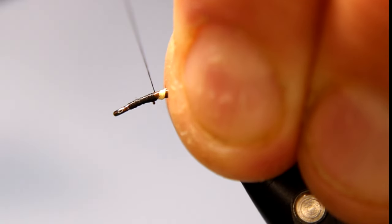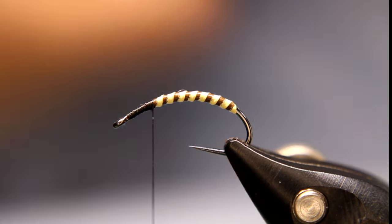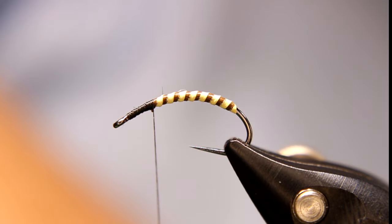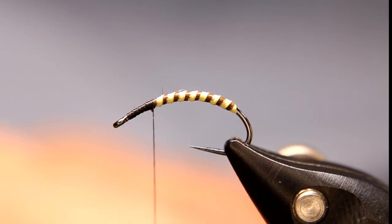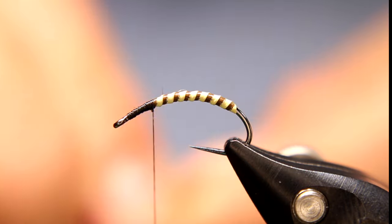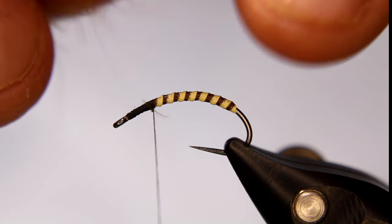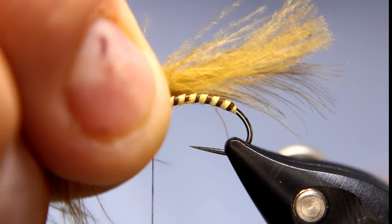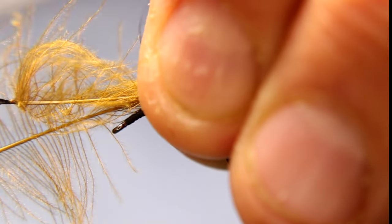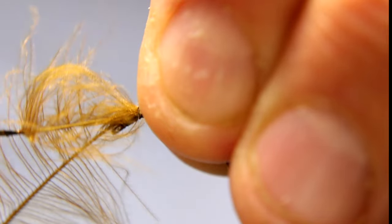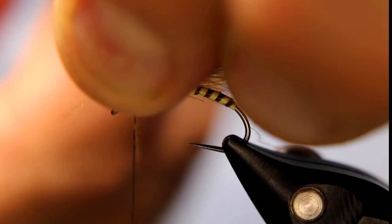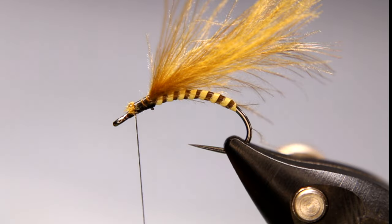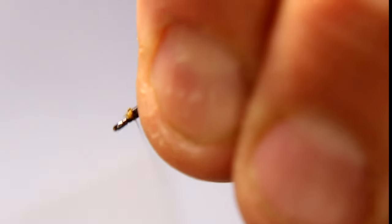Then I'm going to take two of those olivey brown CDC feathers, stacked on top of each other. Line up the tips and try to get them going in the same direction. Then I'm going to tie them in so they're facing backwards, about maybe the thorax distance past the hook. Tie that down, come forward, stopping short of the eye. Lift that up, cut those butts off. Keep that because there's good CDC fibers on there for dubbing and stuff.